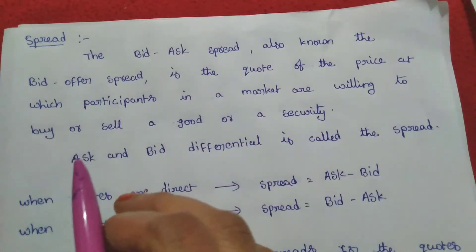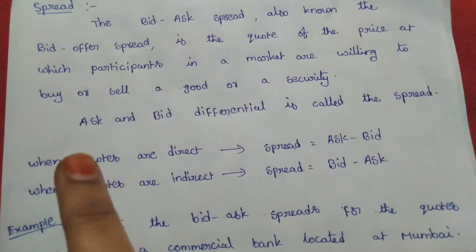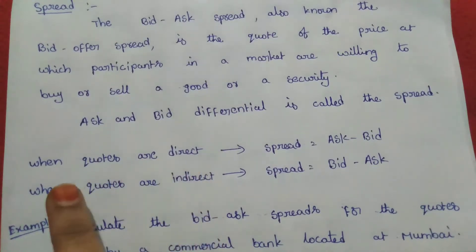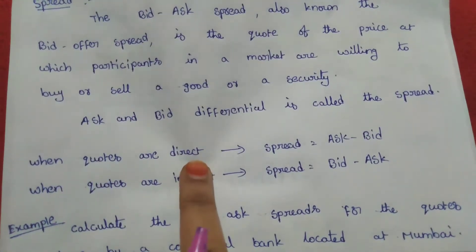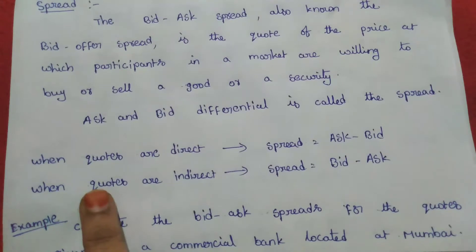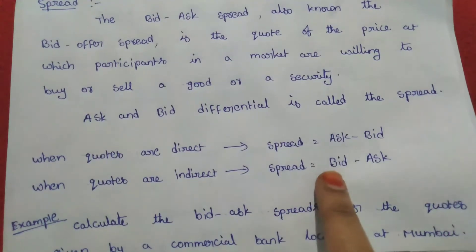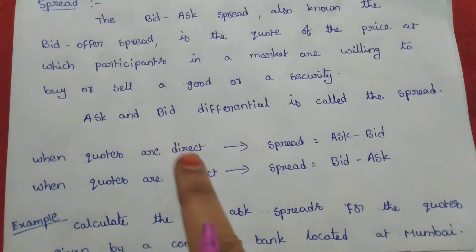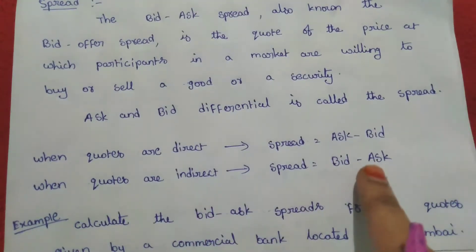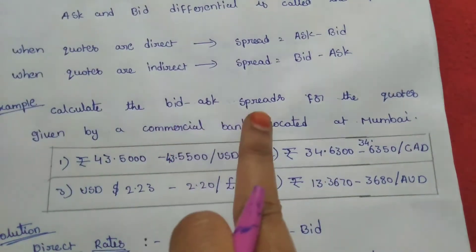The bid-ask spread calculation varies depending on whether the exchange rate is a direct rate or an indirect rate. When the quotes are direct, the bid-ask spread formula is: Spread = Ask Price minus Bid Price. When the quotes are indirect, the bid-ask spread = Bid Price minus Ask Price.